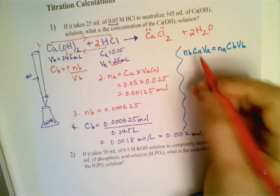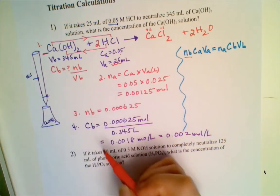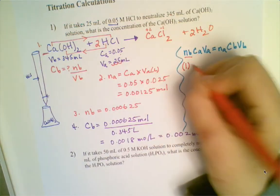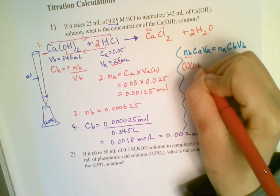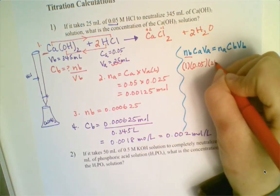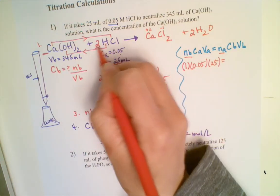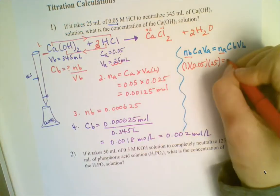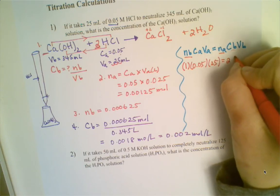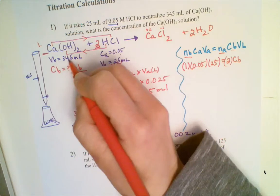Looking at the stoichiometry: moles of base is 1, the concentration of acid is 0.05, and the volume of acid is 25 mL. Moles of acid from the balanced equation is 2. The concentration of base is our unknown, and the volume of base is 345 mL.